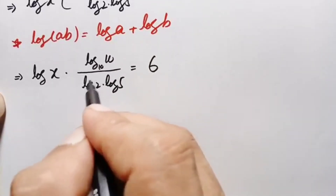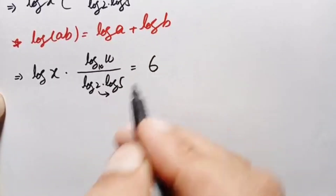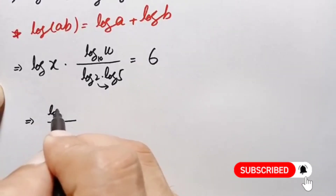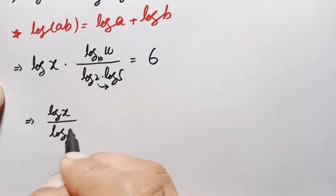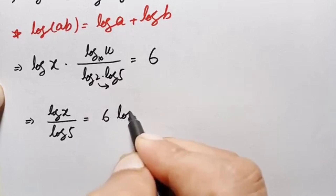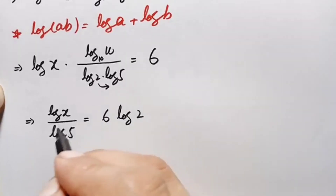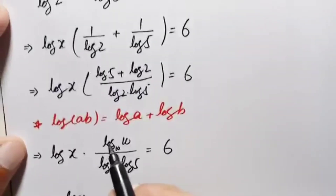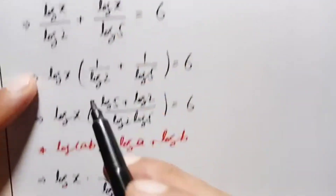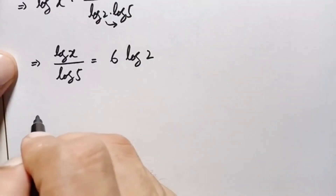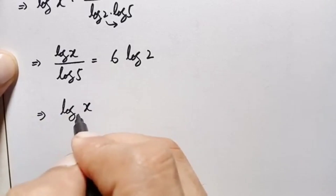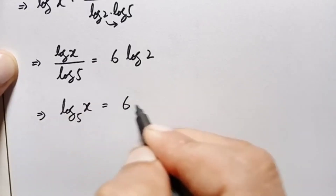Moving log of 5 to the right hand side, this equation becomes log of x divided by log of 5 is equal to 6 times log of 2. Using the change of base property again, the left hand side becomes log of x with base 5 is equal to 6 times log of 2.